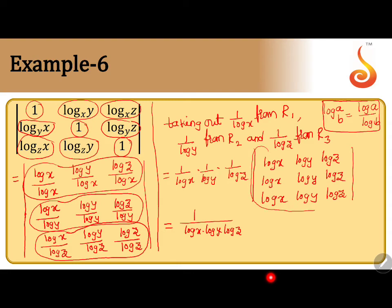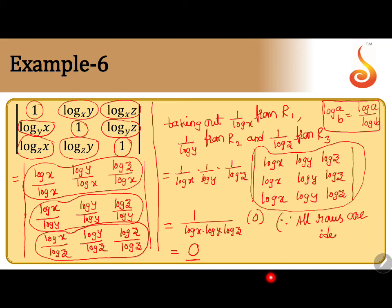Now observe this determinant: all the rows are identical — each row is log x, log y, log z. If any two rows are identical, the value is 0. Here all rows are identical, so the determinant value is 0. Therefore 0 times something is always 0. All rows are identical: log x, log y, log z repeated in every row. Since all rows are identical, the determinant value is 0, and the answer is 0.